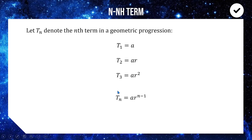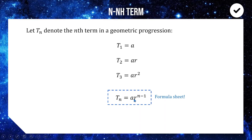So t₃ is ar to the 3 minus 1. From this we get our generic formula: the nth term of a geometric progression is the first term multiplied by the common ratio to the power of n minus 1. As always, this is on your formula sheet — you just need to know what a, r, and t stand for and you're good to go.